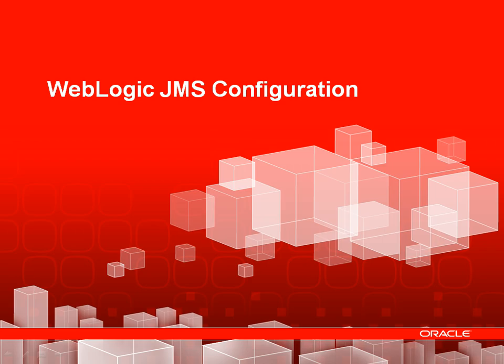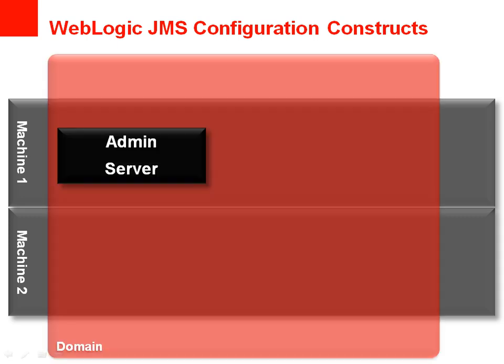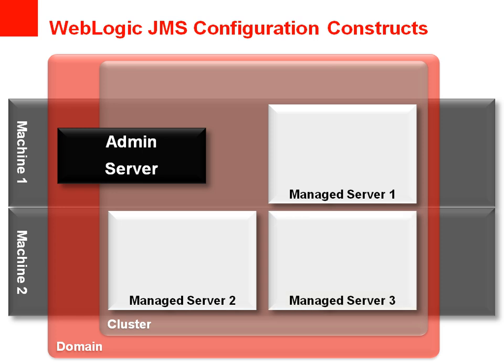Next, let's take a look at the details of the WebLogic JMS configuration. You'll start with one or more machines where you want to install and use WebLogic. Once you install WebLogic, you will need to create a domain in order to deploy and use your applications. Each domain has a single administration server that is used to manage the domain configuration, and you will typically create one or more clusters within your domain. Each cluster has one or more managed servers. The first configuration construct is the JMS Connection Factory, which manages the connection that message producers make to the JMS destinations. You can configure things like load balancing, server affinity, and transactionality within the connection factories.